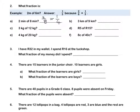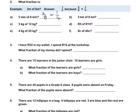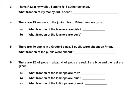Pause this video to complete Question 2. Question 3. I have 32 rand in my wallet. I spend 16 rand at the tuck shop. What fraction of my money did I spend? The answer is 16 out of 32, or in simplest form, one half, because 16 is exactly one half of 32.